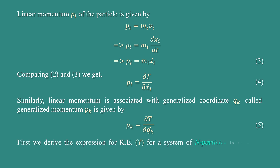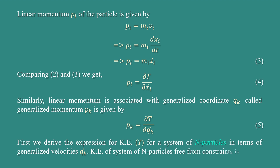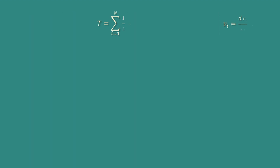First, we derive the expression for kinetic energy for a system of n particles in terms of generalized velocities q̇ₖ. The kinetic energy of a system of n particles free from constraints is T = Σᵢ₌₁ᴺ ½MᵢVᵢ².